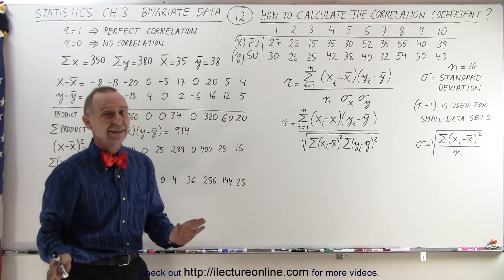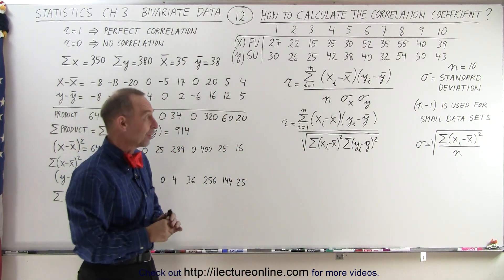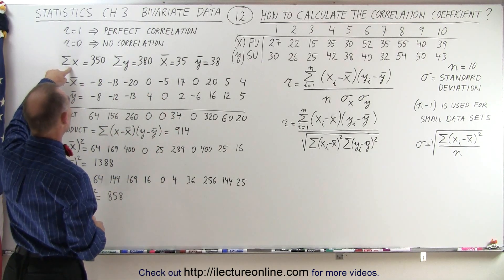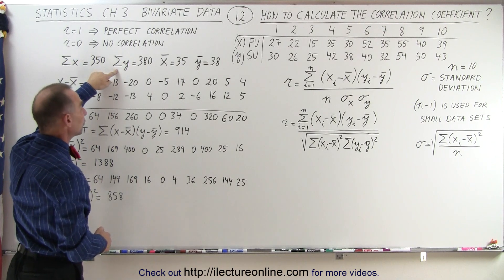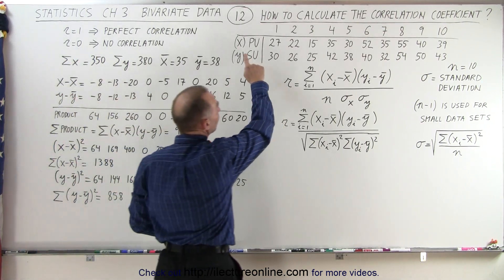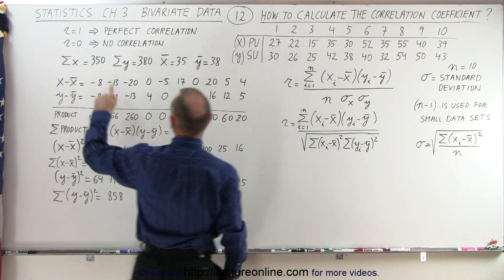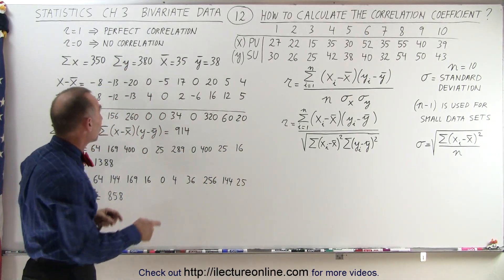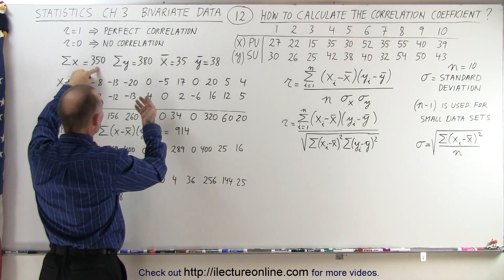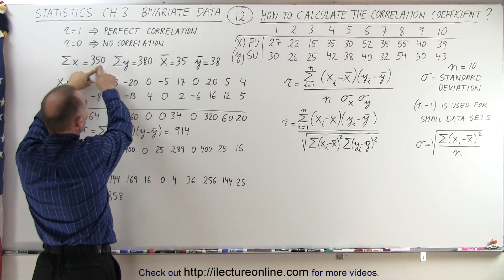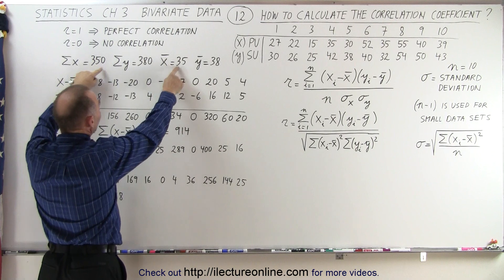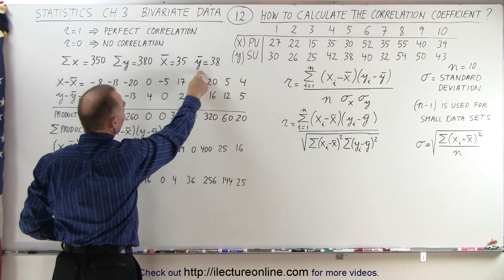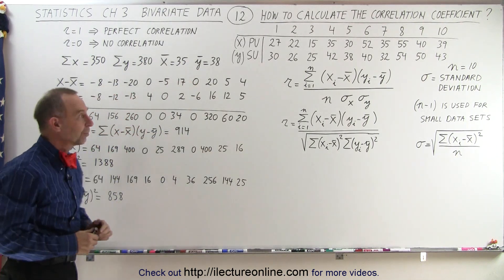There's nothing like an actual example to show how to do that. First, we need the sum of all the x values and the sum of all the y values. When we sum up all the x values and all the y values, we get 350 and 380. To find the average, we divide by the number of data points, which is 10: 350 divided by 10 is 35, and 380 divided by 10 is 38 — giving us the average for push-ups (x) and sit-ups (y).